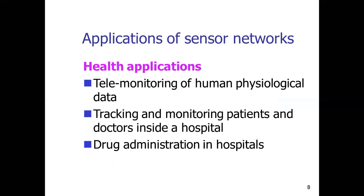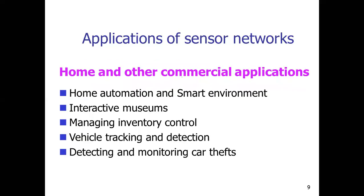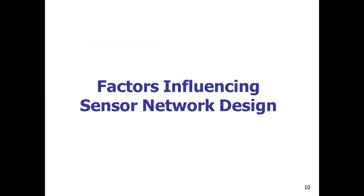Sensor networks are used in health applications such as tracking and monitoring patients and doctors inside a hospital, drug administration in hospitals, and telemonitoring of human physiological data. They are also used in home automation and smart environments, managing inventory control, and vehicle tracking and detection.